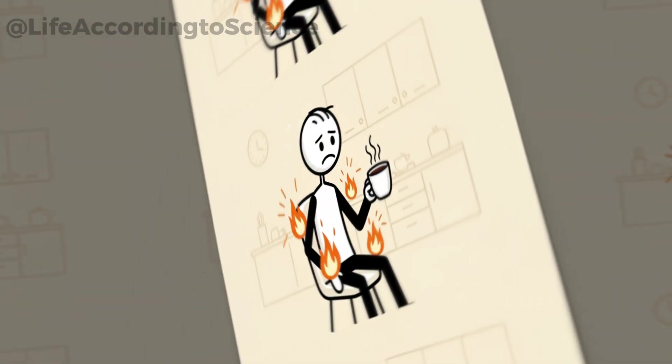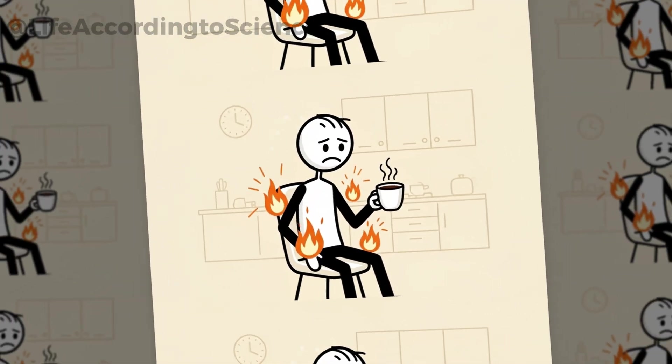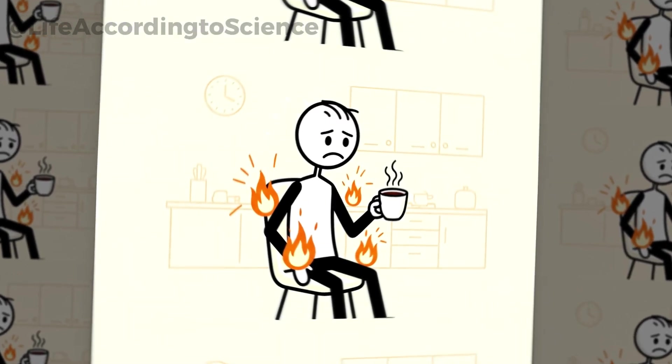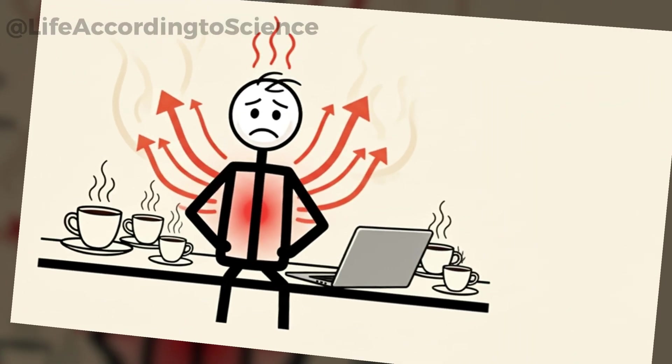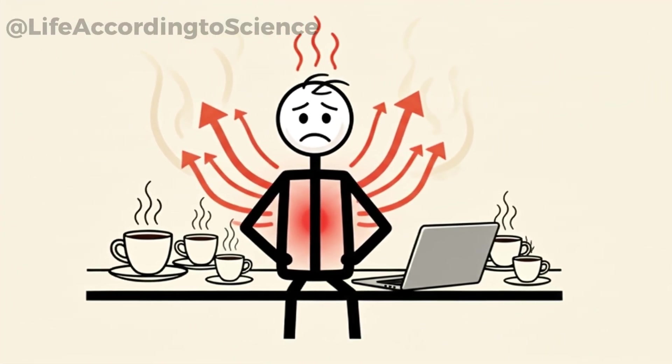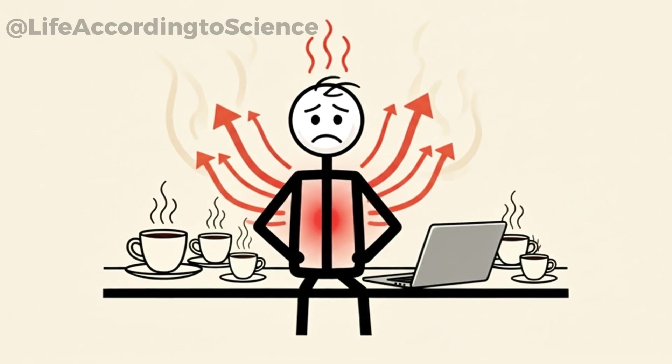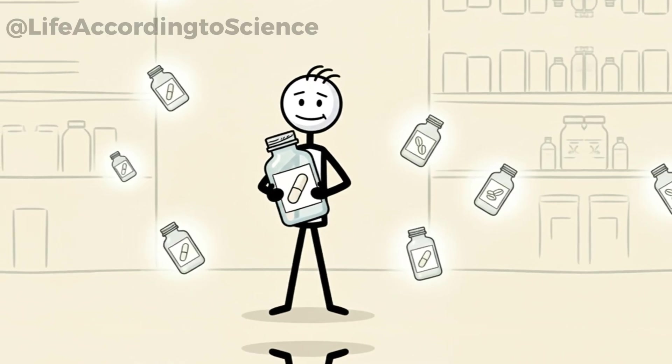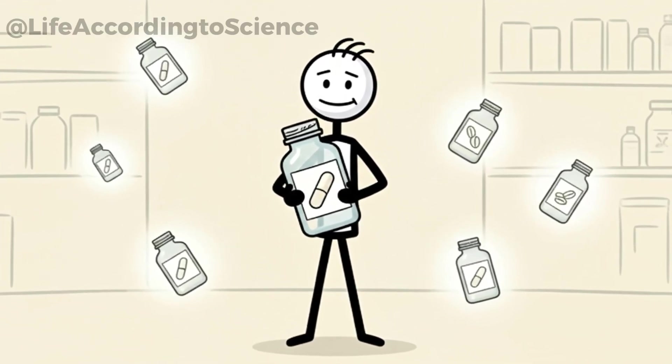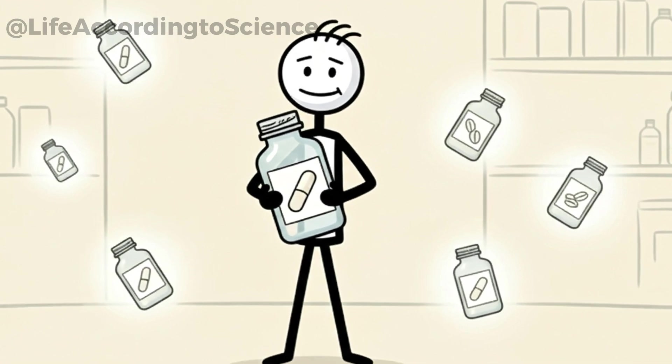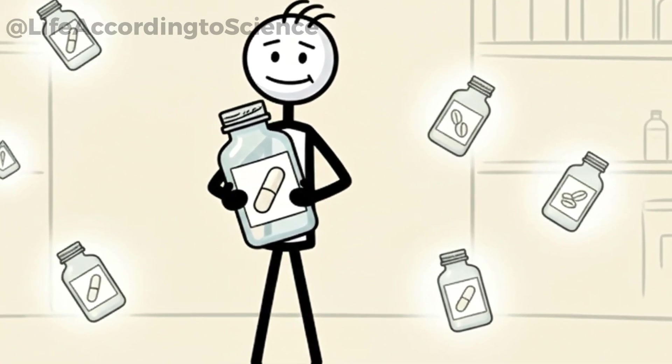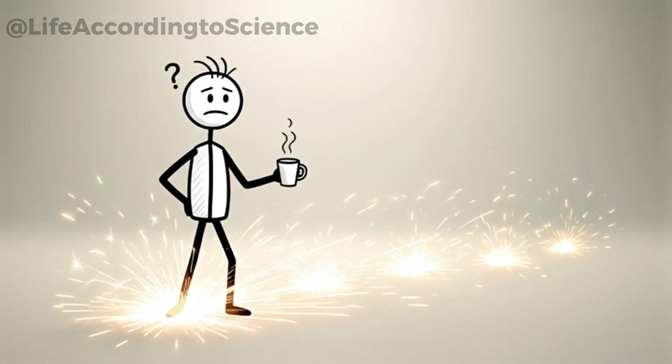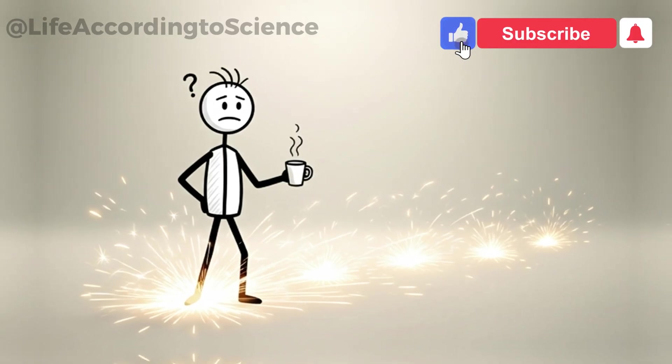One of coffee's most celebrated effects is its ability to speed up metabolism. With five cups a day, your body burns calories slightly faster, even when you're just sitting at your desk. Caffeine increases thermogenesis, the process by which your body generates heat and burns energy. That's why many weight loss supplements list caffeine as a key ingredient. But while the effect is real, it's not as dramatic as people imagine. The metabolic boost usually peaks within the first few days of high coffee consumption, but then your body adapts.